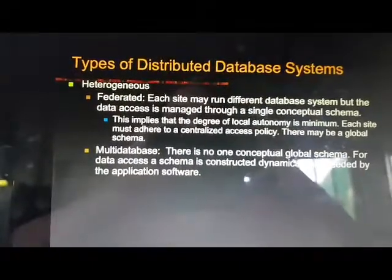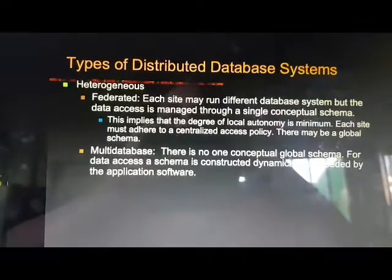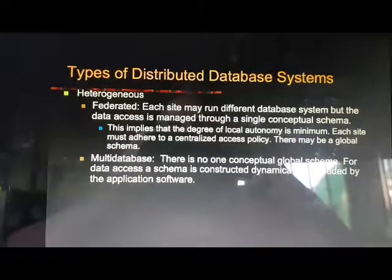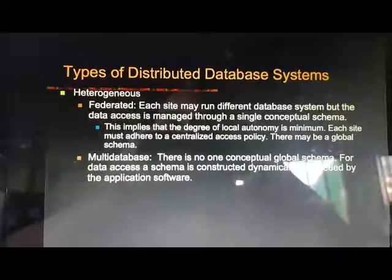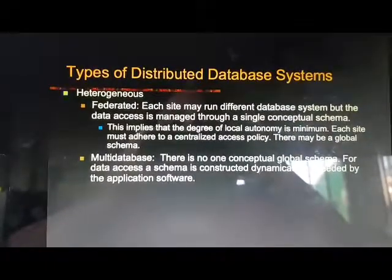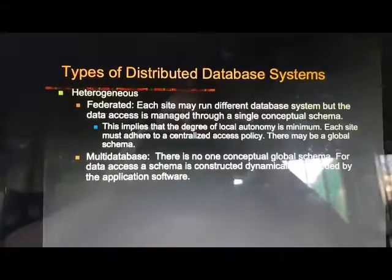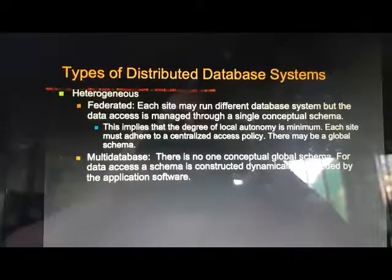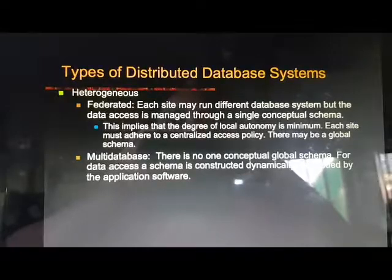Basically, we are having two types: heterogeneous and homogeneous distributed database systems. If we talk about heterogeneous, the term heterogeneous means the data that is stored in the distributed system is of different types. If we talk about homogeneous database system, then the data inside the distributed databases is of same type.